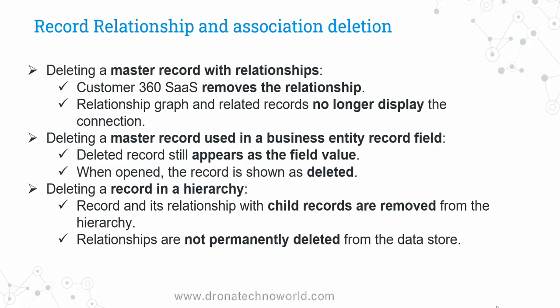If you are using the deleted record in a different business entity field, then the deleted record will disappear from that field value, and when you try to open it, it will show as deleted. In case of hierarchy, the record and its relationship with child records are removed. These relationships are not permanently deleted from the data store — like the original record, the relationship will just be marked as deleted.